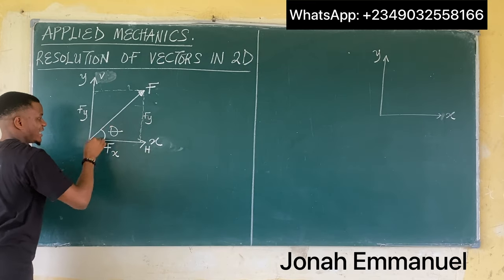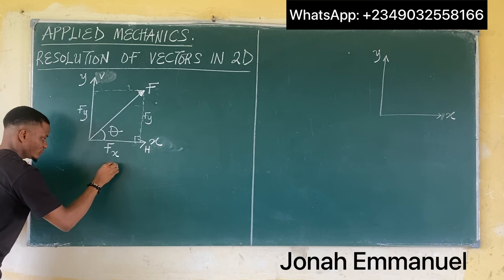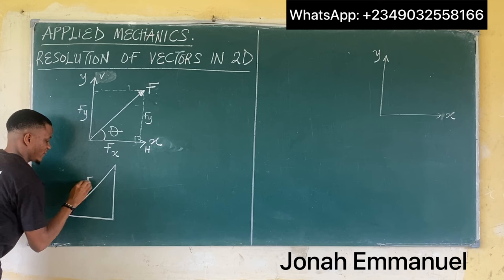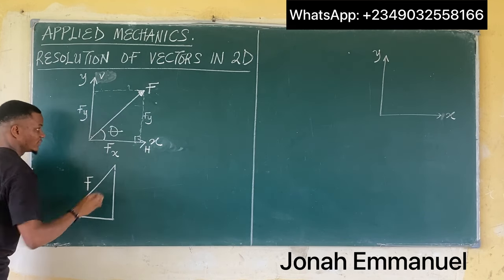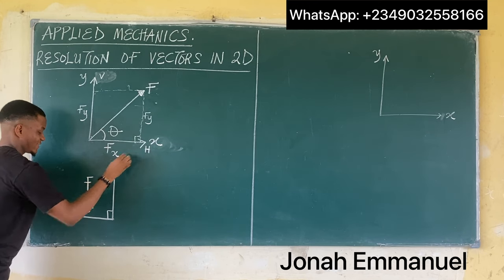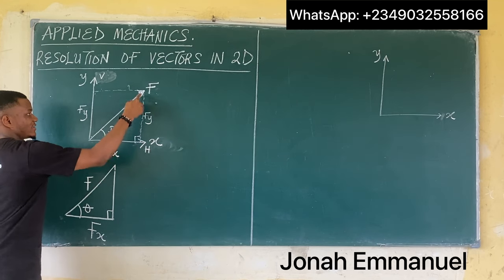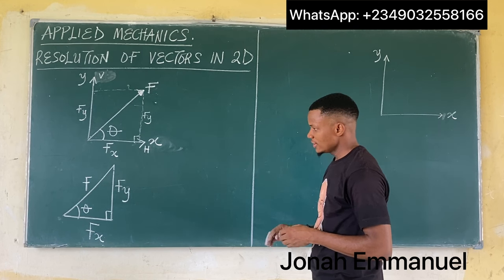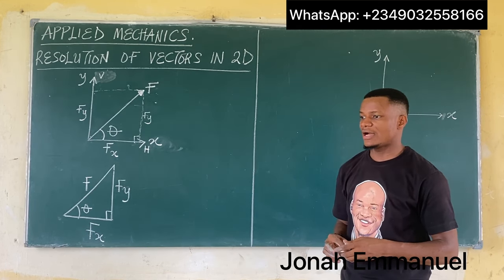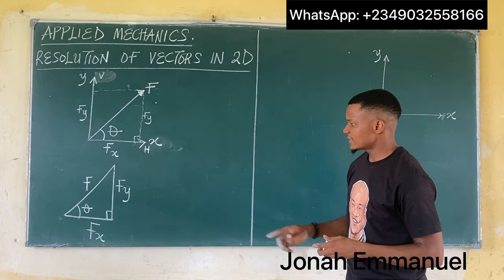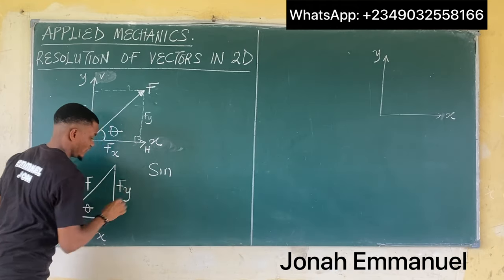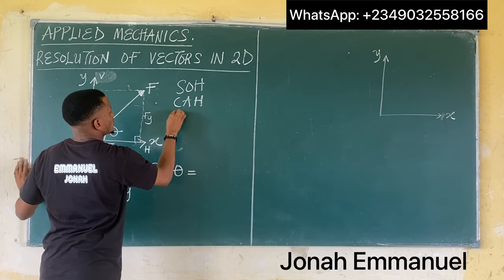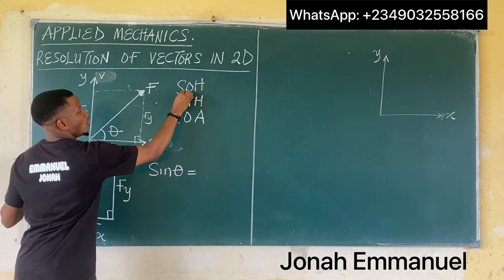We can look at a right-angle triangle here: we have F as the hypotenuse, angle theta, a 90-degree angle, Fx as the adjacent side, and Fy as the opposite side. For this right-angle triangle, we can apply trigonometric ratios. Taking sine of the angle theta, using SOHCAHTOA: sine equals opposite over hypotenuse. Here, the opposite is Fy and the hypotenuse is F. So sine of theta equals Fy over F.